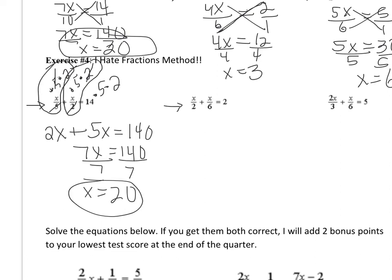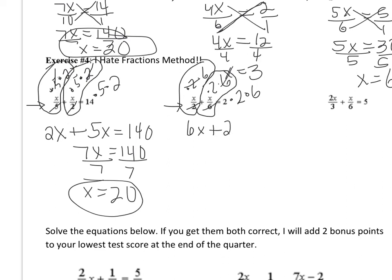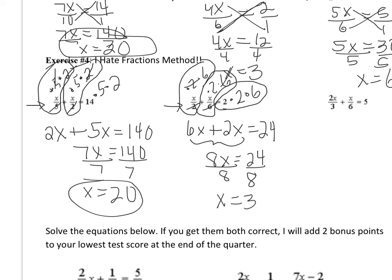For the second one, the denominators we want to get rid of are 2 and 6. Multiply the first term, second term, and third term each by 2 and by 6. In the first piece, the 2 cancels with the 2, leaving 6X. In the second piece, the 6 cancels with the 6, leaving plus 2X. In the third piece, 2 times 2 is 4 times 6 is 24. Combining like terms: 8X = 24. Dividing by 8 gives X = 3 — same as above, same equation, different method.